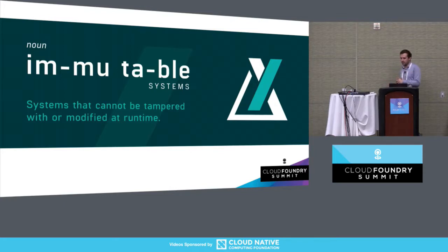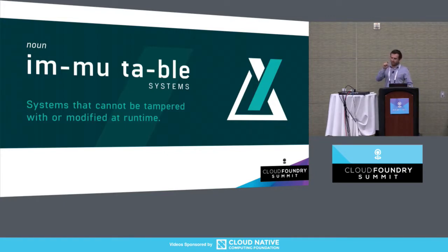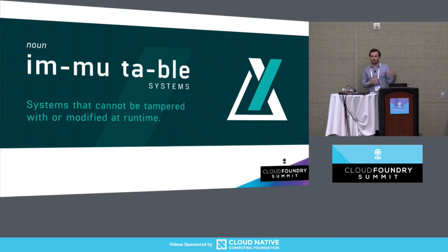So let's talk a little bit about immutability and what it means. We define an immutable system — and the play on words ceases to amaze me — as systems that cannot be tampered with or modified at runtime. That's how we define it, and there are plenty of other ways. Someone came up to me at the booth and asked about functional programming and immutability in that context — no, not that. The other way people think of immutability is immutable data: once something's written to disk, it's read-only, can't be overwritten.